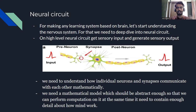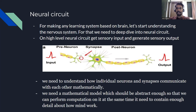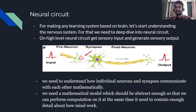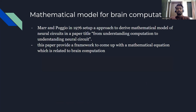To understand how the neural circuit produces output, we need to look at how individual neurons and synapses communicate with each other mathematically. From neuroscience, we need to derive a mathematical model that is abstract enough for computation, yet contains enough detail about how the mind works. You need a mathematical equation that contains enough detail about how the mind of any macroscopic organism is working, while still being abstract enough for computation.